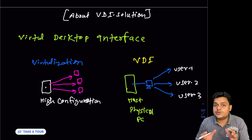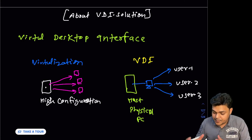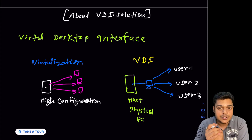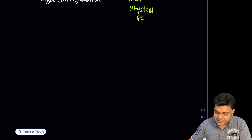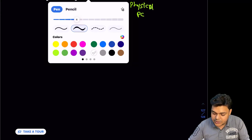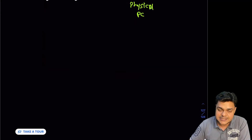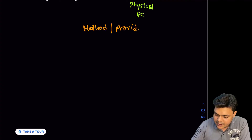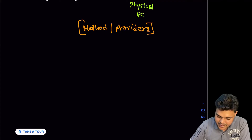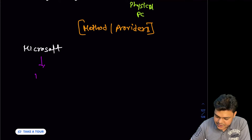It's our responsibility to know about the different types of providers that can help us establish our VDI environment. I'll give you complete information about the providers so you understand the base of VDI before you proceed to implement the services. Multiple providers are available in the market. Starting with Microsoft — in case of Microsoft, we have Windows Server operating systems such as Server 2012, 2016, 2019, or 2022.